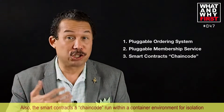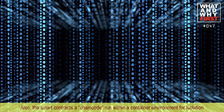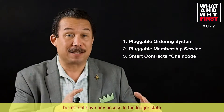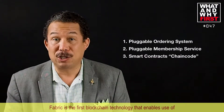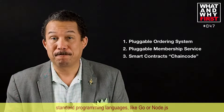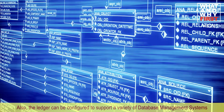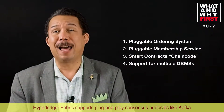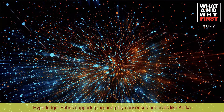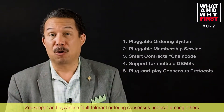Also, these smart contracts or chaincode run within a container environment for isolation. They can be written in standard programming languages and do not have any access to the ledger state. Fabric is the first blockchain technology that enables use of standard programming languages like Go or Node.js. Also, the ledger can be configured to support a variety of database management systems. Another feature is that Hyperledger Fabric supports plug-and-play consensus protocols like Kafka, Zookeeper, and Byzantine Fault Tolerant ordering consensus protocols, among others.